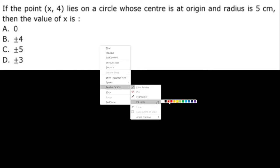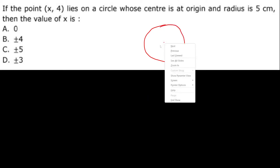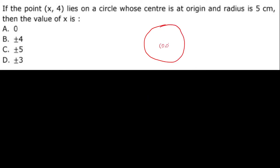Circle with center at origin. Now somewhere this point is lying on the circle, this is x comma 4, and this distance is 5.